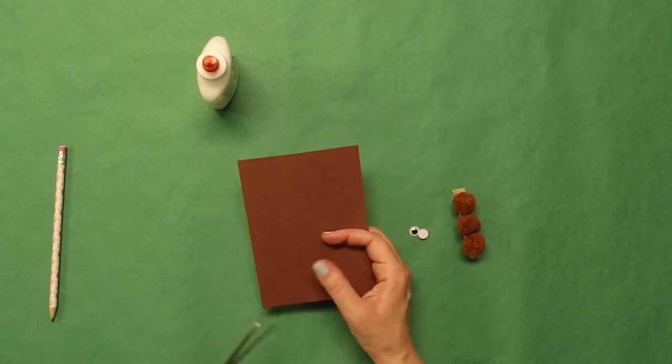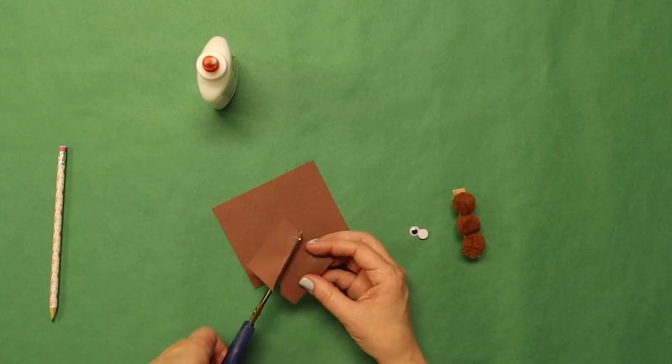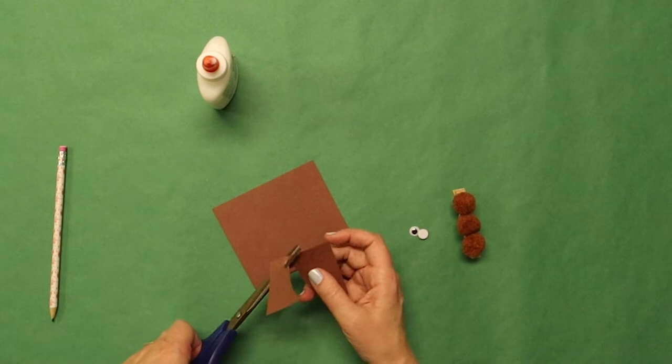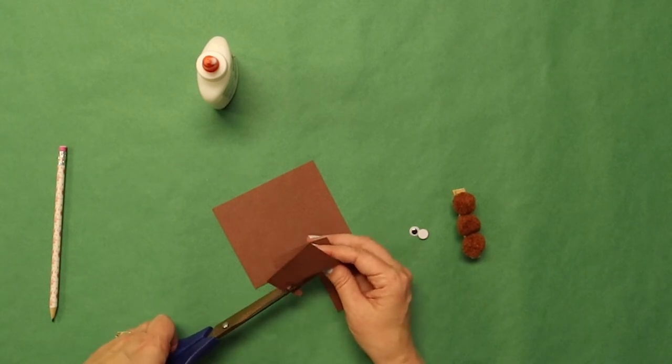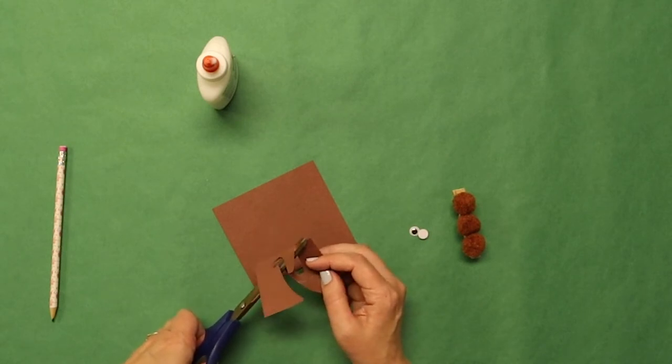So we're gonna just cut this out. You can choose whatever shape. Mine are kind of U-shaped. Yours might be V-shaped. Maybe they have zigzags. I need to get better scissors.